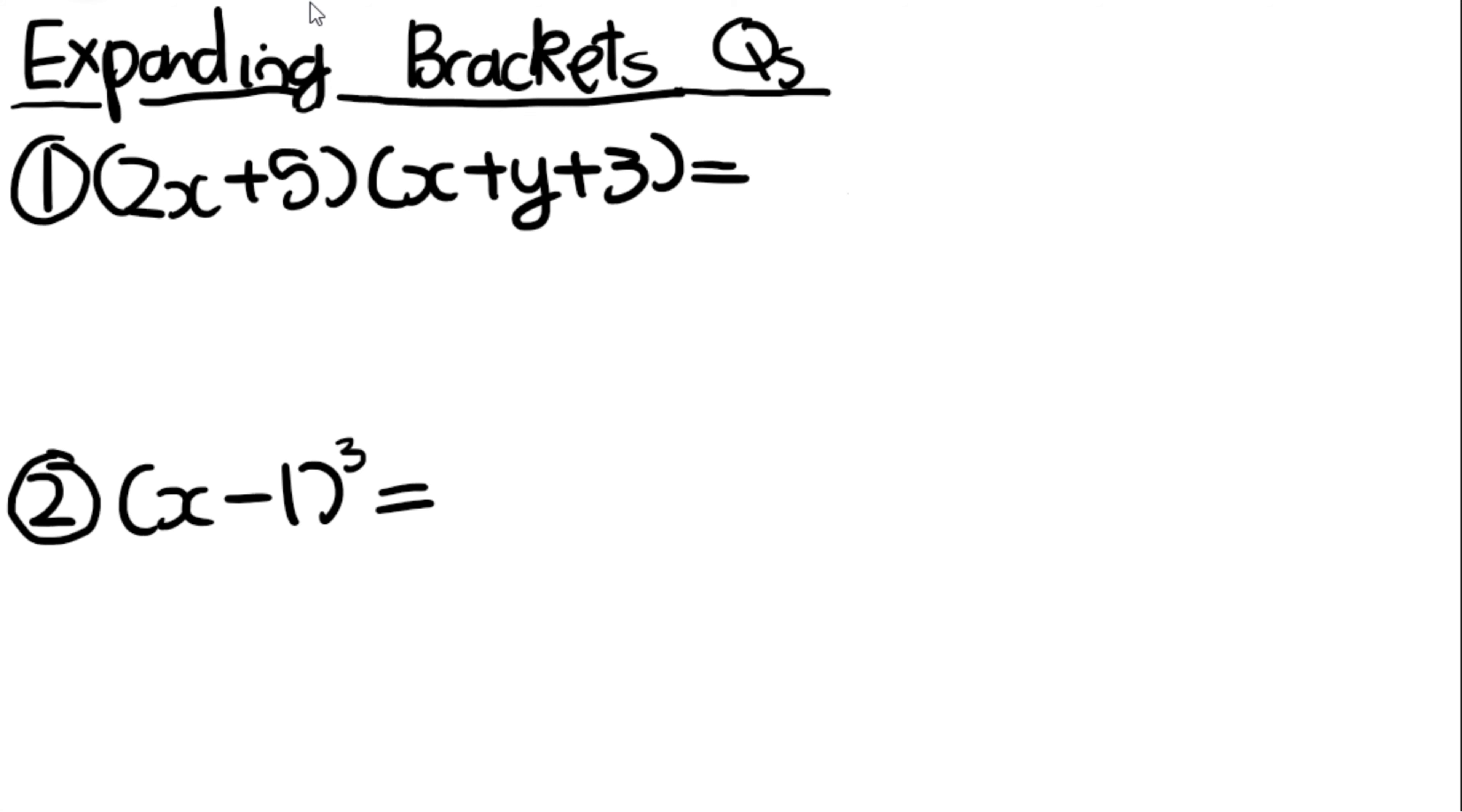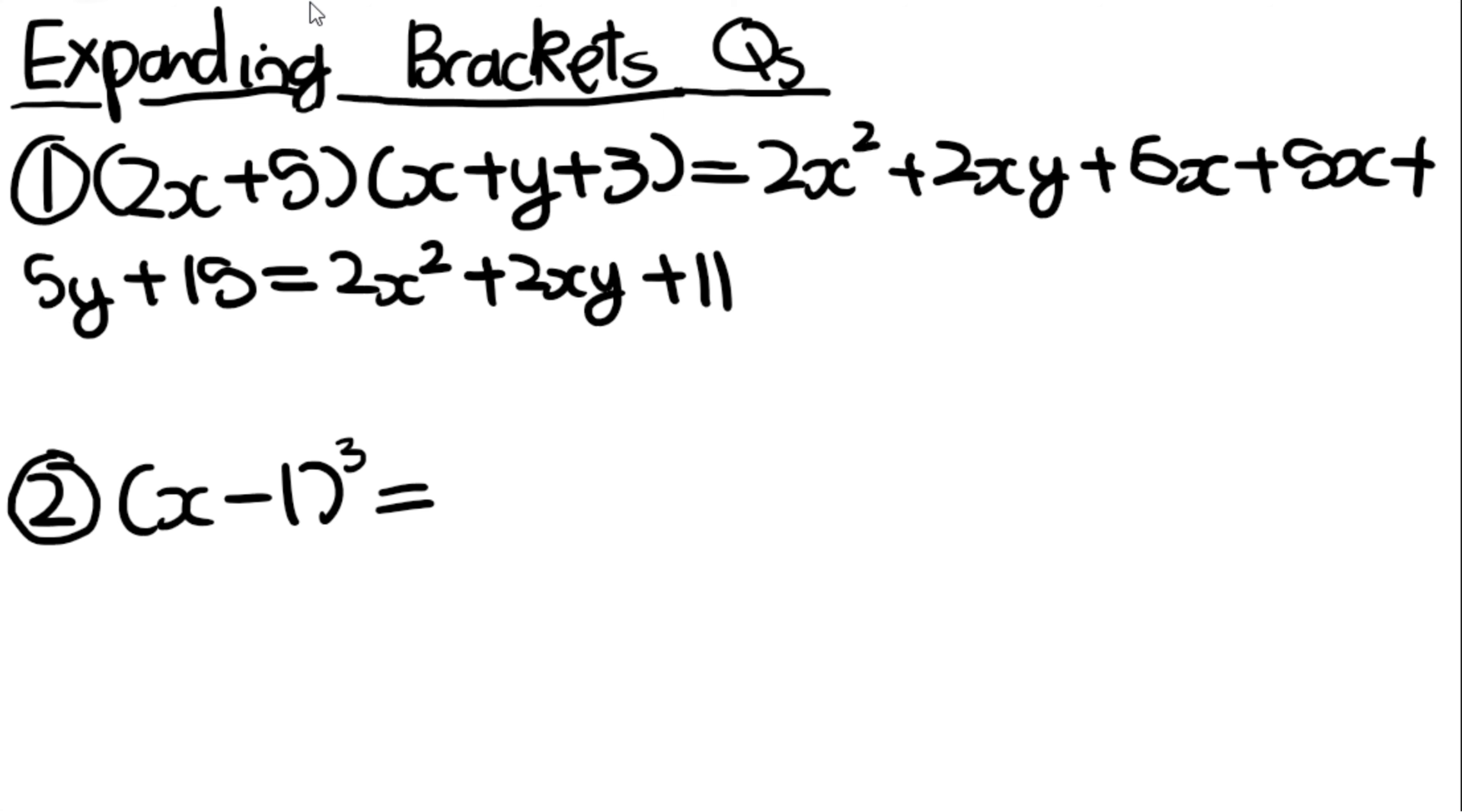Okay, so 2x times x is 2x squared, 2x times y is 2xy, 2x times 3 is 6x, 5 times x is 5x, 5 times y is 5y, and 5 times 3 is 15. You can simplify this because the like terms do 2x squared plus 2xy plus 11x plus 5y plus 15. Just as a note, if you went straight to this because you realized the like term straight away, that's fine, you'll still get the marks. Plus, you don't need to write this step if you don't want to.